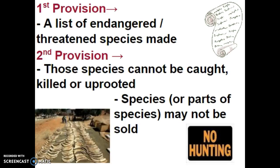For the Endangered Species Act, there are a couple of steps that need to be done. First, a list of endangered and threatened species needs to be made so we know who is on the list. The second provision is that once those species are on the list, they cannot be caught, killed, or in the case of plants, uprooted. Species or any parts of them may not be sold.